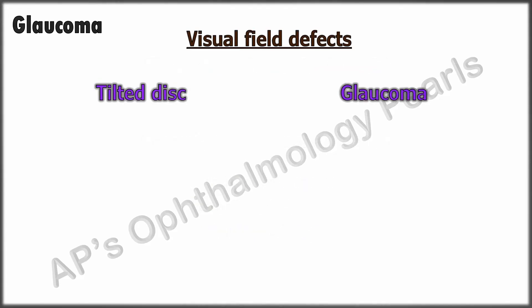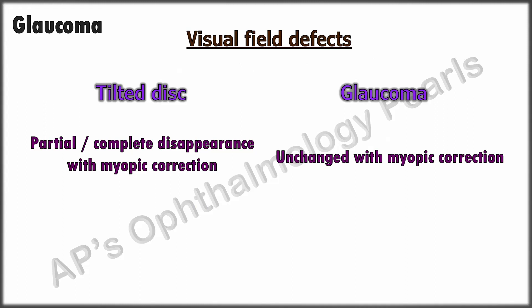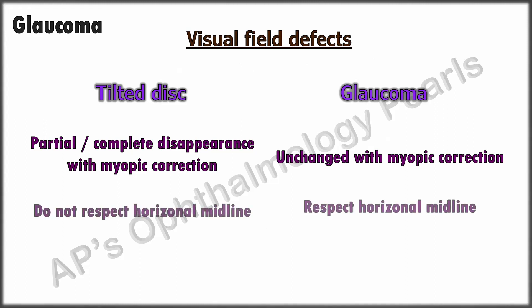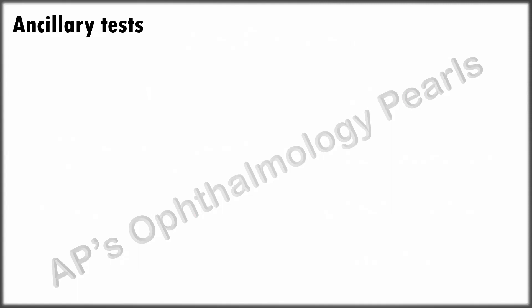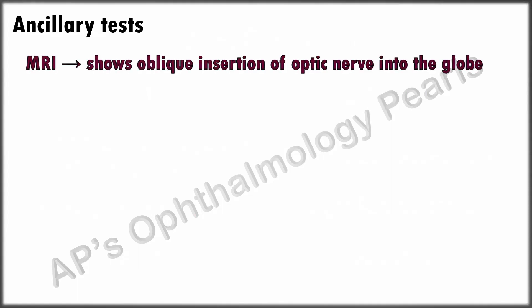The early field defects of tilted discs can mimic those due to early glaucoma. Partial or complete disappearance of field defects with myopic correction, as in our case, suggests tilted discs. Glaucomatous defects respect the horizontal midline, and progression of fields is diagnostic of glaucoma. Our patient has a normal intraocular pressure and stable fields for the past five years that disappear with myopic correction, so it is safe to say that at present there is no evidence of glaucoma. In doubtful cases, ancillary tests may be required; MRI is most useful as it shows the oblique insertion of the optic nerve into the globe and helps in ruling out other pathology.